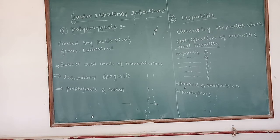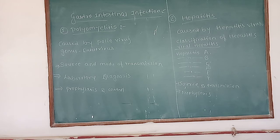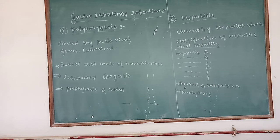Symptoms include weakness or discomfort, anorexia, nausea, vomiting, and liver tenderness. These are minor symptoms produced in the prodromal phase. After this, symptoms usually subside with the onset of jaundice. Recovery is slow over a period of 4 to 6 weeks.